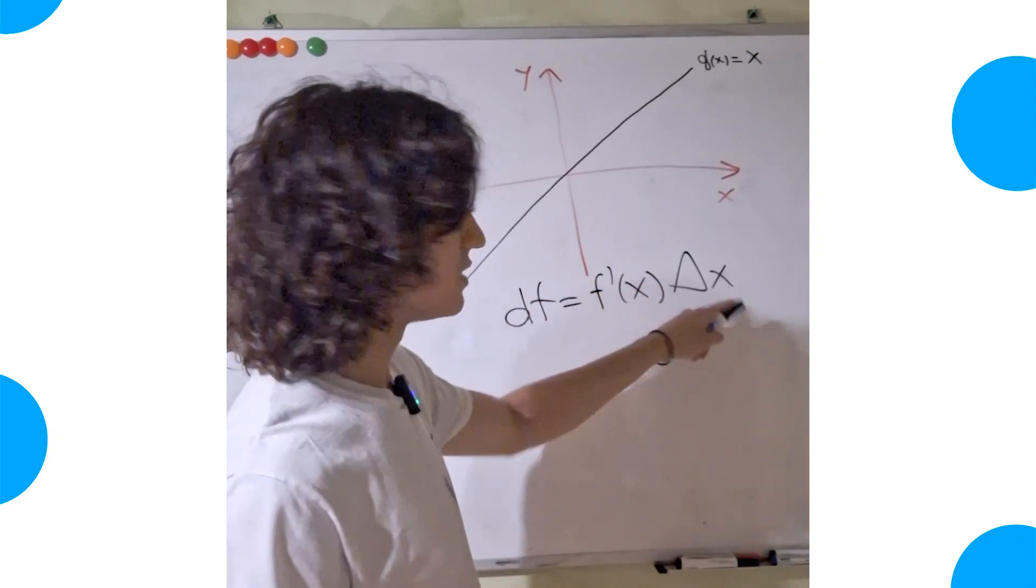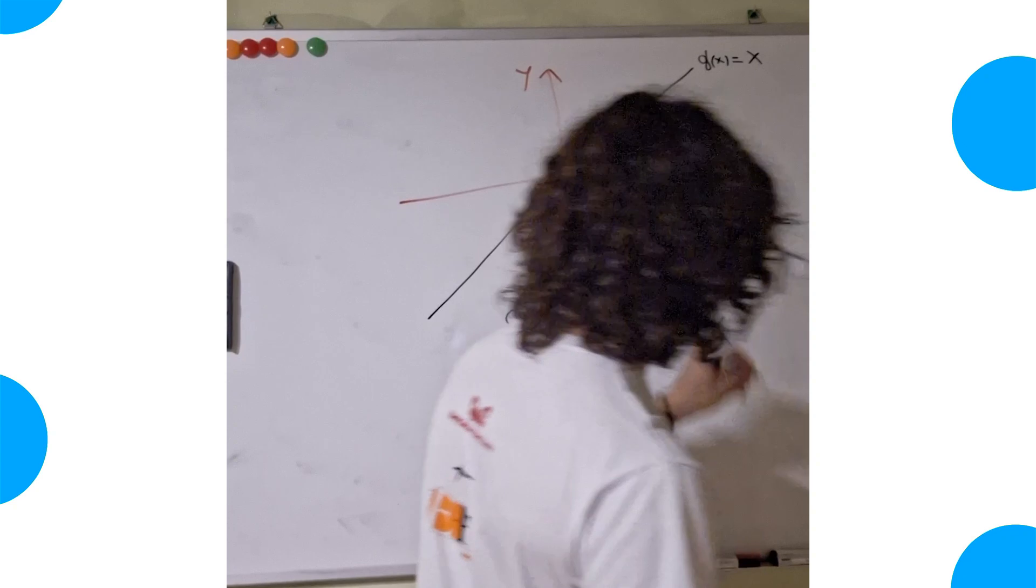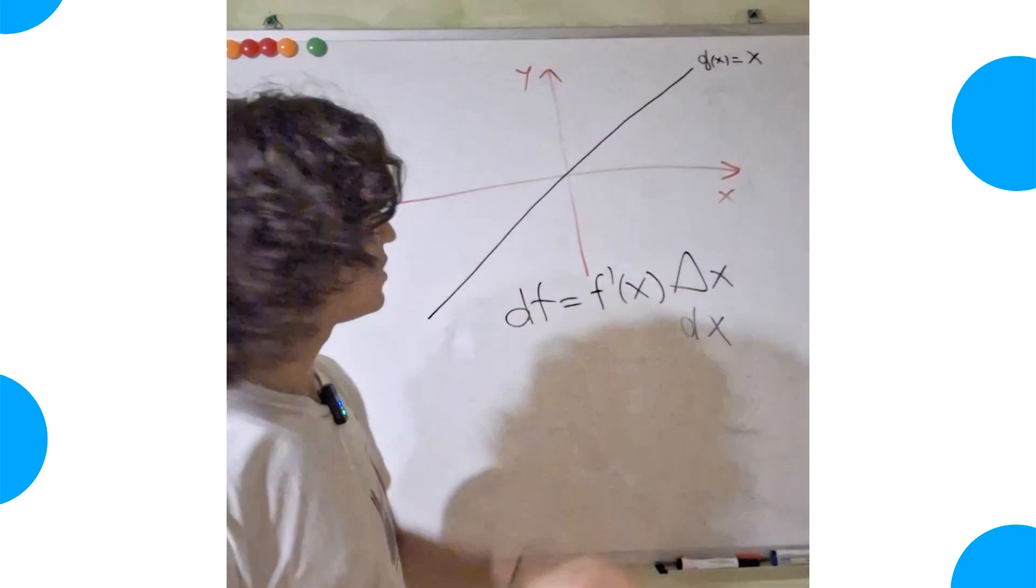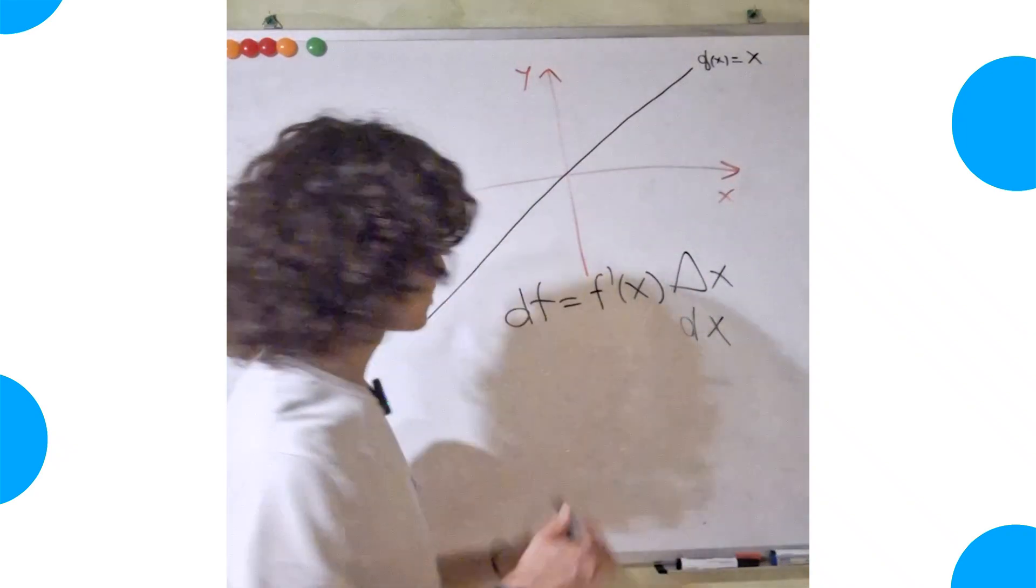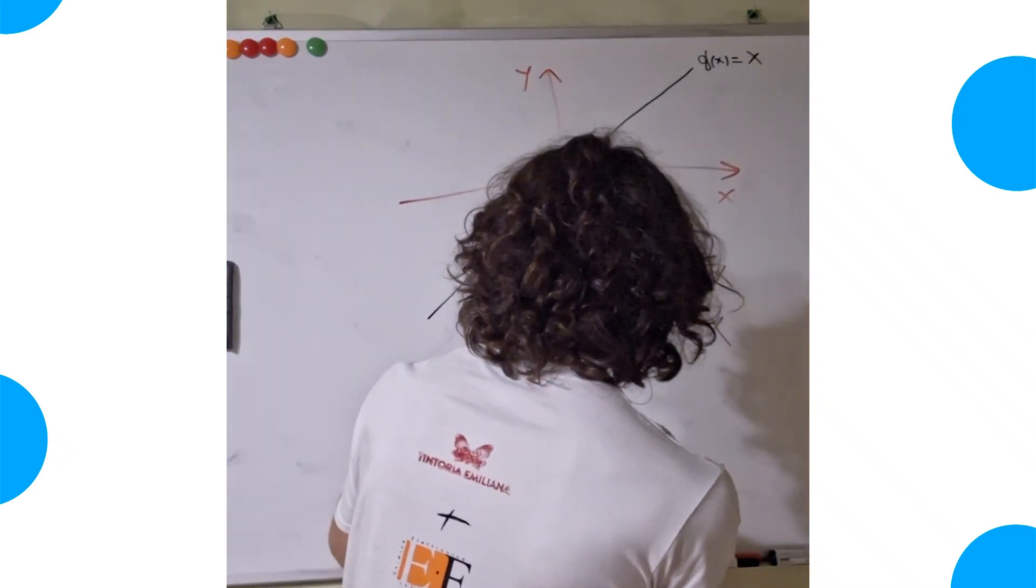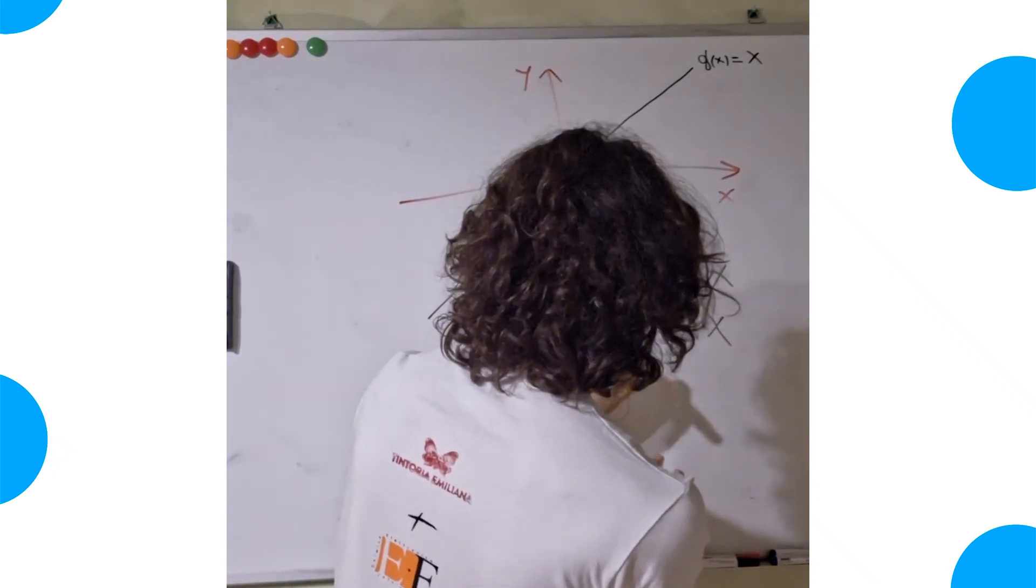And I said that we could replace this delta x by a dx. And why can we do this? Because let's take the differential of this function g of x equals x. So dg equals the derivative, that is 1 times delta x.